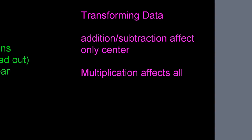A typical AP problem might say: new value = 3 × old value + 6. Multiplication affects everything. Addition only affects the center. So for the mean and median, multiply by 3 then add 6. For measures of spread — IQR, standard deviation, range — you only multiply by 3; you do not add 6. For individual values like min and max, both multiply and add apply. This is a very common AP question.